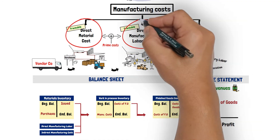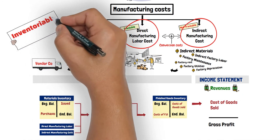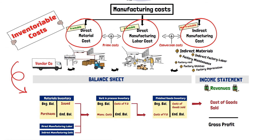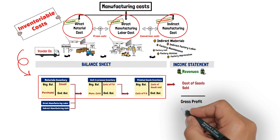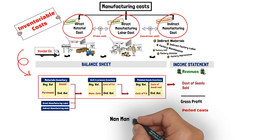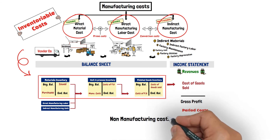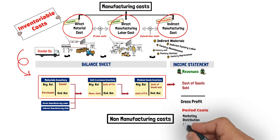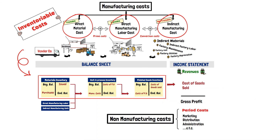These three categories of costs are called inventoryable costs because they are reported as inventories when incurred. The period costs are all the non-manufacturing costs incurred by the manufacturing company, like costs of marketing, distribution, and administration. These costs are recognized immediately as expenses in the profit and loss statement when incurred.